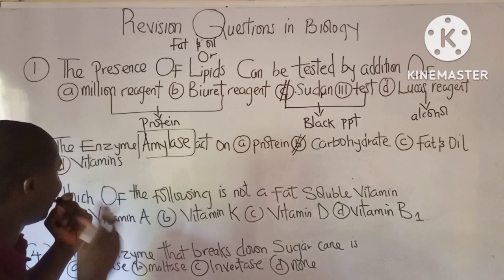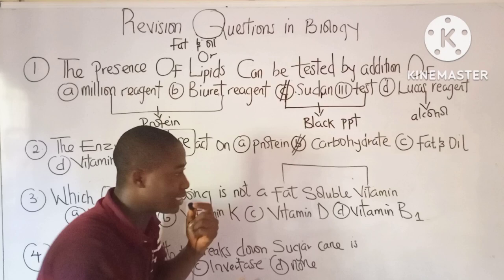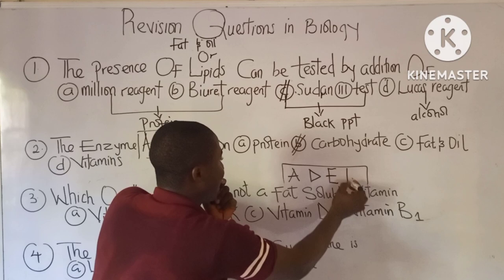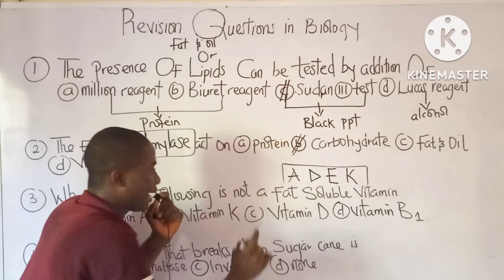Question 3 asks which of the following is not a fat-soluble vitamin. The fat-soluble vitamins consist of vitamins A, D, E, and K — remembered as ADEK. From the options, vitamin A, vitamin K, and vitamin D are all fat-soluble vitamins.